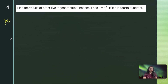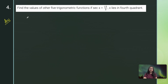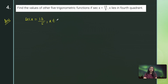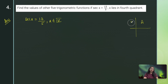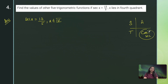Question 3 (worked example): Find the other 5 trigonometric functions if sec x = 13/5 and x belongs to the fourth quadrant. In the fourth quadrant, only cos and sec are positive — and our given value sec x = 13/5 is indeed positive, which is correct. From this, cos x = 5/13.